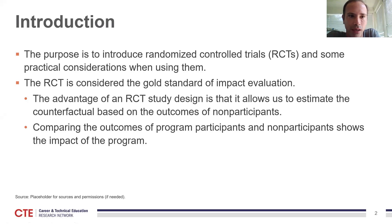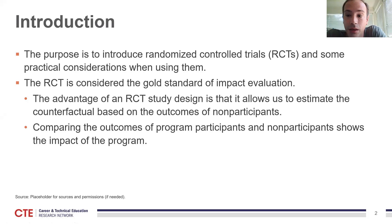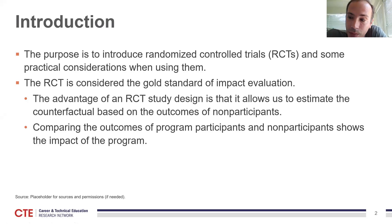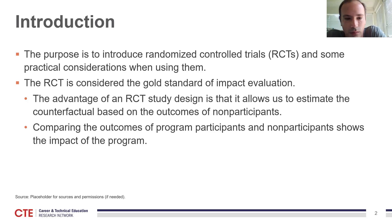Just like we talked about yesterday, you often want to study the impact of a program on an outcome that the program intends to improve. For example, we might be interested in the effect of taking CTE courses on high school graduation rates or rates of post-secondary enrollment. For individuals who participate in the program, we can observe their outcomes, like whether they graduated from high school or enrolled in post-secondary education. But to know how the program affected their outcomes, we need to know what their outcomes would have been had they not participated.